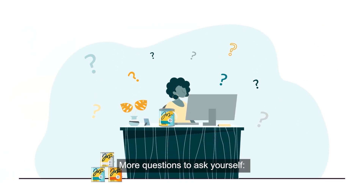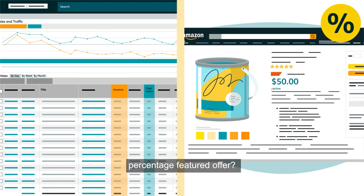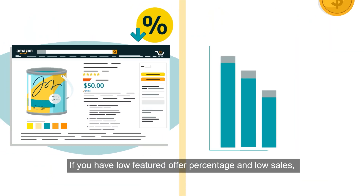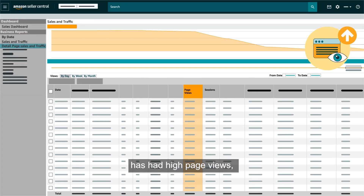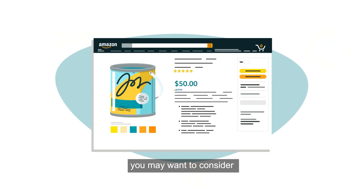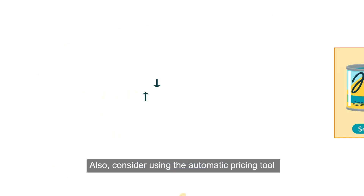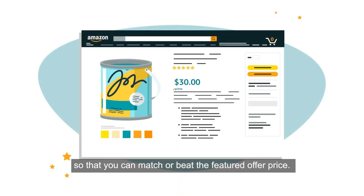Also consider how sessions and page views correlate to your percentage featured offer — do you get more traffic when you are the featured offer? If you have a low featured offer percentage and low sales but your product detail page has had high page views, you may want to consider reducing the price of your product to try and become the featured offer. Also consider using the automatic pricing tool so that you can match or beat the featured offer price.